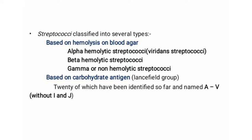Several classification systems exist, but in medical bacteriology there are two important criteria. The first is based on hemolysis on blood agar. The second is based on carbohydrate antigen present in the Streptococcus. Aerobic and facultative anaerobic streptococci are classified based on their hemolytic property.